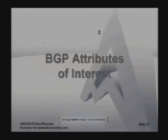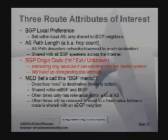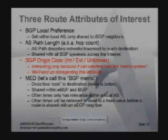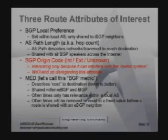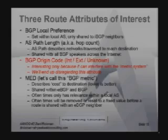Let's look at the attributes of interest. The three blue attributes — I'm calling them the attributes of interest. BGP local pref is something you've set within your local ASN, and it's only shared within IBGP neighbors and confederate members. AS path length is the number of ASNs that need to be traversed to reach your target, also known as the hop count. This is the path used to reach the target, and all BGP speakers across the Internet share it. It's the mandatory attribute — everyone tacks on their ASN.